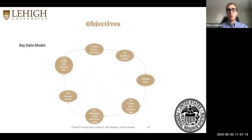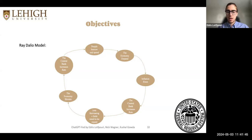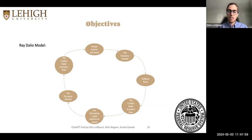The objective is we're building a macro model, and part of this macro model is the Ray Dalio model, which is one of the key aspects. In this model, Ray Dalio explains how the economy works — it's a cycle. We start with people borrowing and spending. You can easily see this in the economy when people are spending more and can borrow money at a cheaper interest rate, and there is a lot of money in the market.